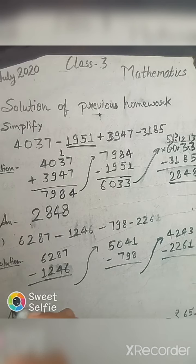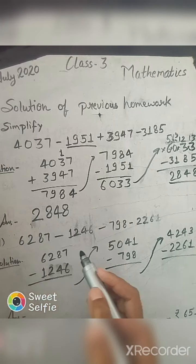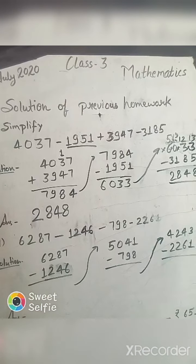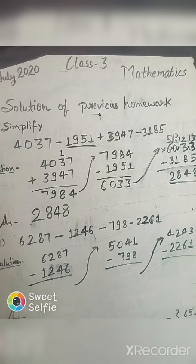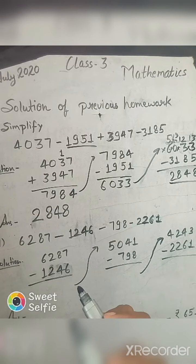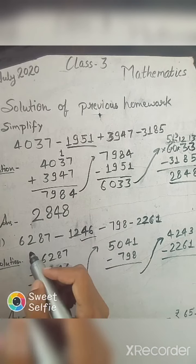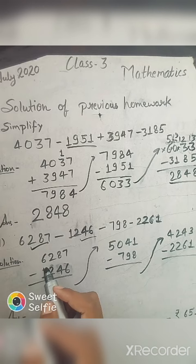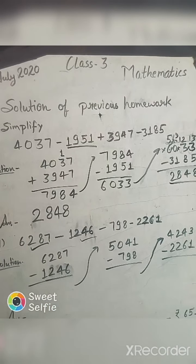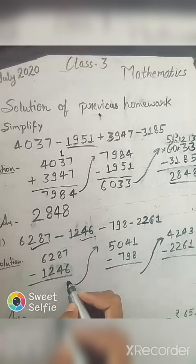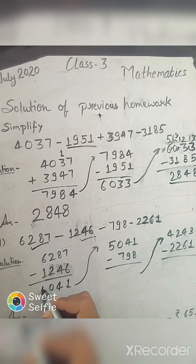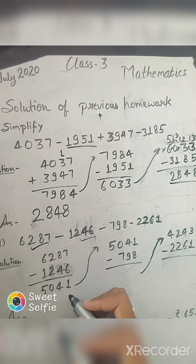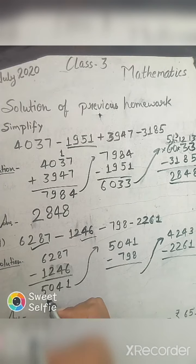Let's see next, part D. In D we have to do: 6287 minus 1246 minus 798 minus 2261. We can see here there is no plus, so we will subtract. Firstly we will subtract 6287 minus 1246. Seven minus six is one, eight minus four is four, two minus two is zero, and six minus one is five. So we get 5041.